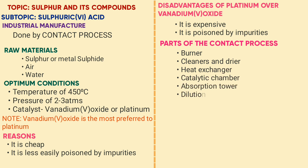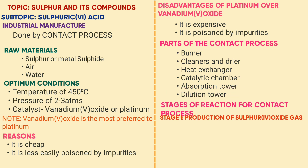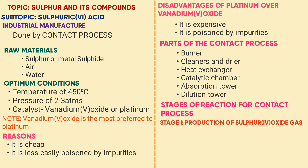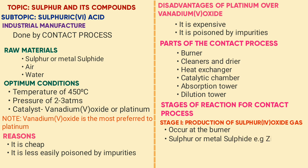This reaction occurs in four stages. Stage one is the production of sulfur dioxide (SO₂), which occurs at the burner. Here sulfur or a metal sulfide, e.g. zinc sulfide, is burned in air to produce sulfur dioxide.